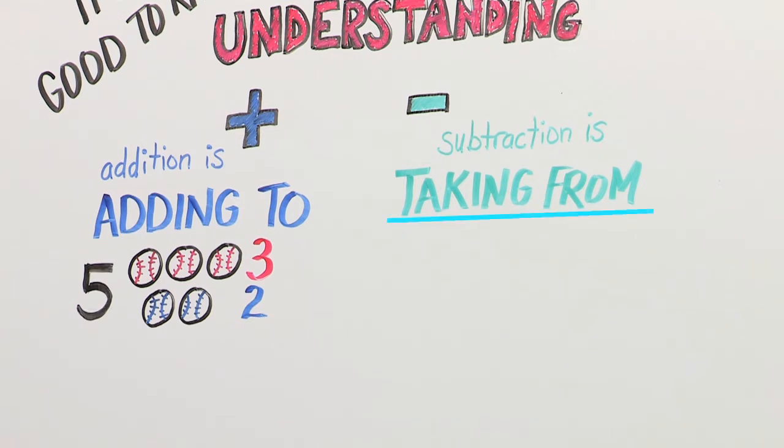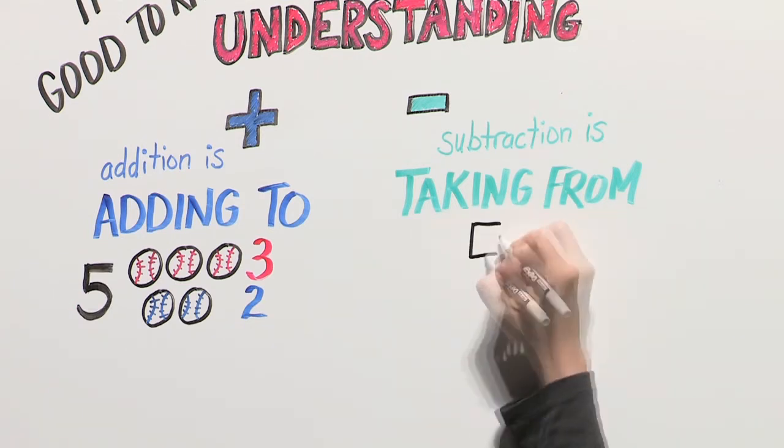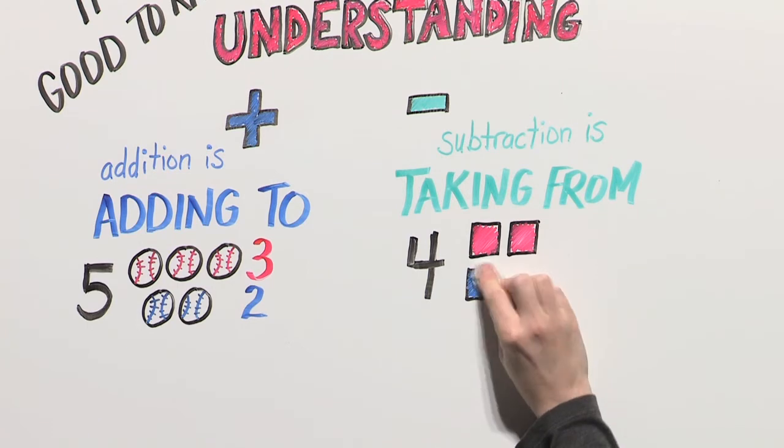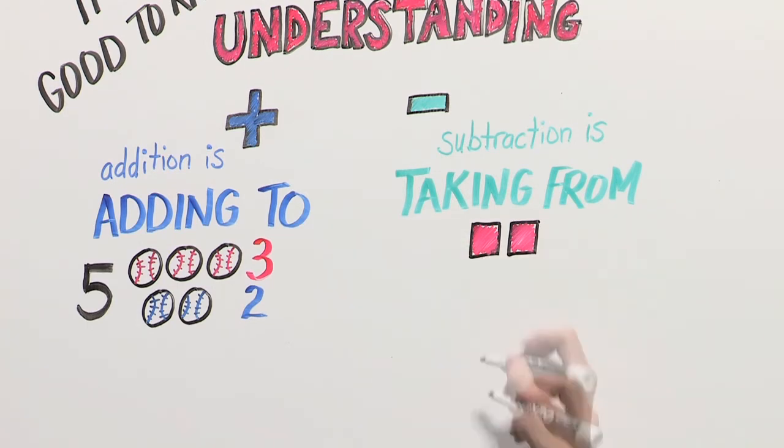Next, talk about subtraction with your child. Count out four blocks. What if we take from this group? Let's take away two blocks. Then we only have two blocks left.